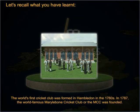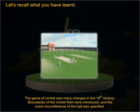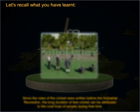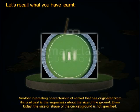The world's first cricket club was formed in Hambledon in the 1760s. In 1787, the world-famous Marylebone Cricket Club, or the MCC, was founded. The game of cricket saw many changes in the 19th century. Boundaries of the cricket field were introduced and the exact circumference of the ball was specified. Since the rules of cricket were written before the Industrial Revolution, the long duration of test cricket can be attributed to the rural lives of the people during that time. Another interesting characteristic of cricket that has originated from its rural past is the vagueness about the size of the ground.